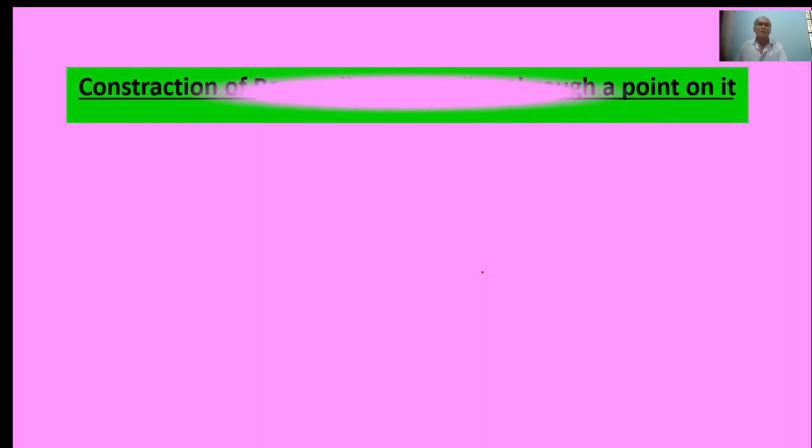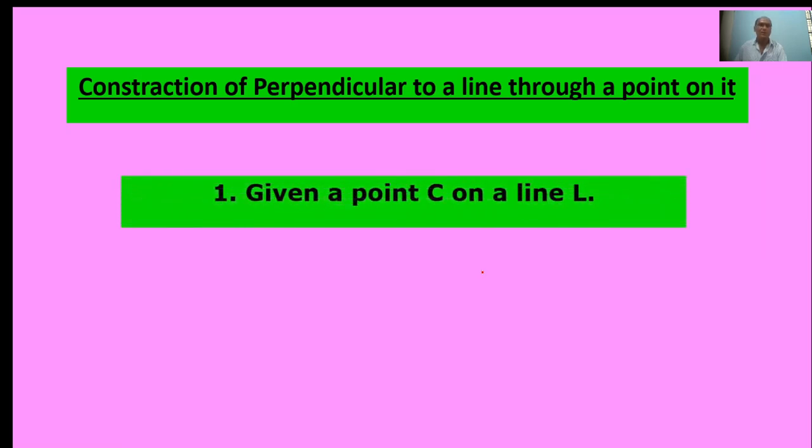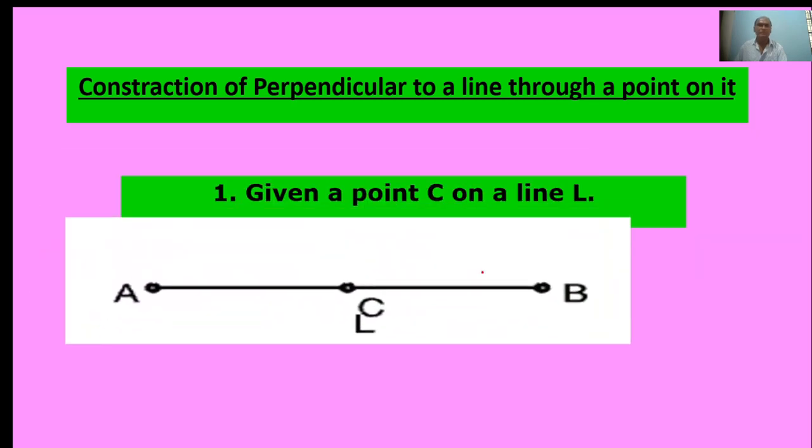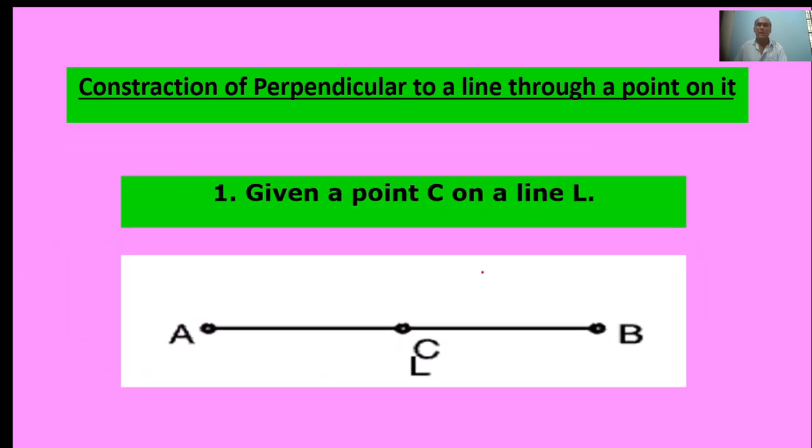Second topic: Construction of perpendicular to a line through a point on it. First of all, given a point C on a line L. Here, line L, point C given.